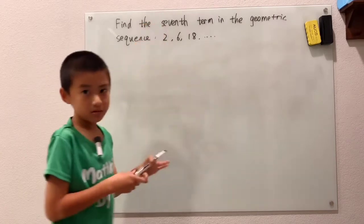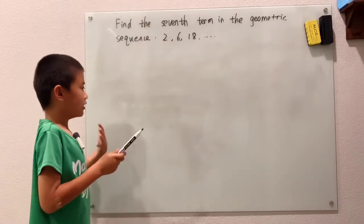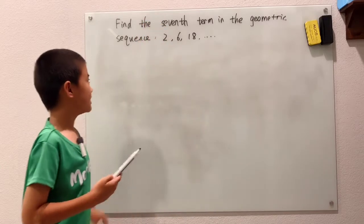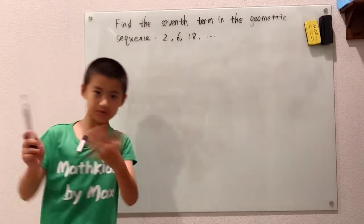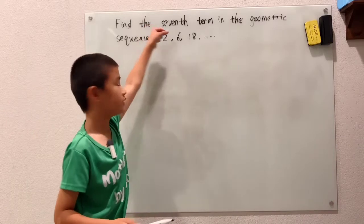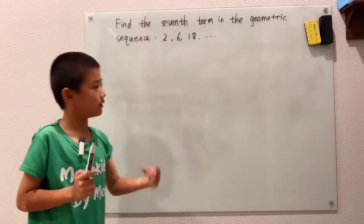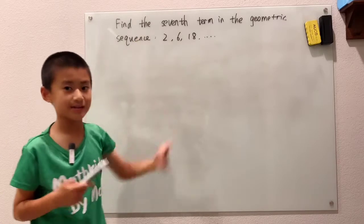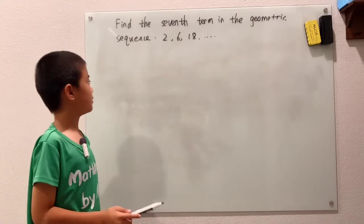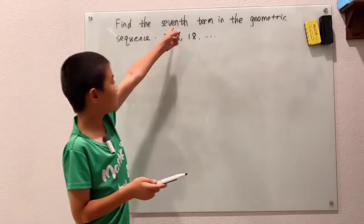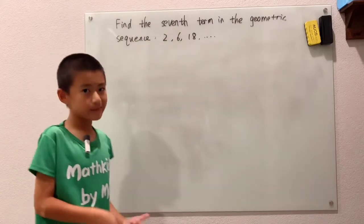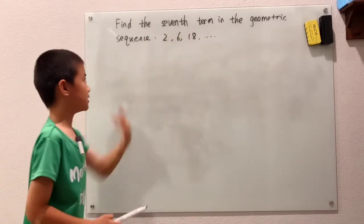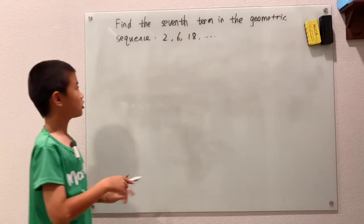Like what we did with arithmetic sequences, to get to the seventh term, we can't just take seven steps — that would count two as a step, and we don't want that. So to get to the seventh term, we only take six steps — six of these 'times three' steps.